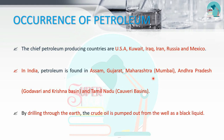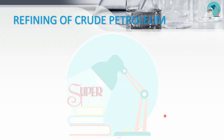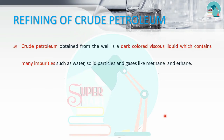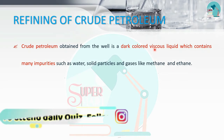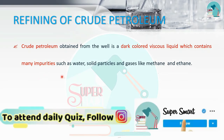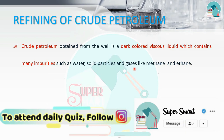To obtain petroleum, you need to drill and pump the oil from the ground. It is called black liquid. Crude petroleum is a dark-colored and viscous liquid. There are many impurities in it, such as water, solid particles, and methane.